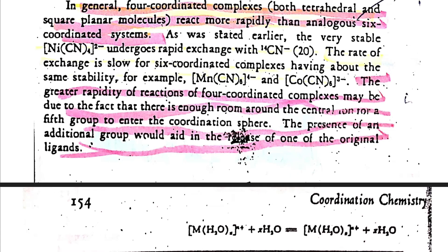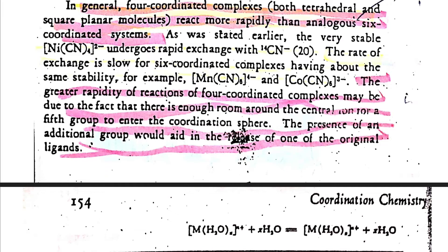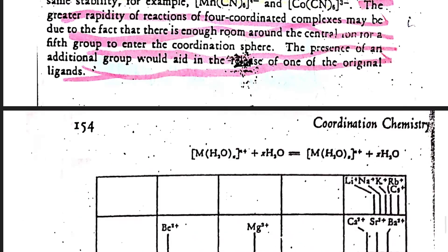The rate also depends on the geometry of the complex. Four-coordinate complexes react faster than six-coordinate complexes because there is enough room around the central metal for a fifth group to enter the coordination sphere, and this incoming group aids replacement of the original ligand. In six-coordinate systems this is not possible due to insufficient space. Additionally, bond breaking is involved in six-coordinate complexes whereas bond making is involved in four-coordinate complexes, including both tetrahedral and square planar geometries.